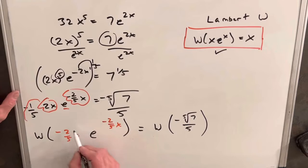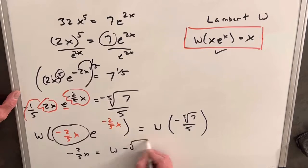So doing that on the left side, we're just going to produce this as our results. We'll have minus 2/5ths x equals Lambert W of minus the 5th root of 7 over 5.